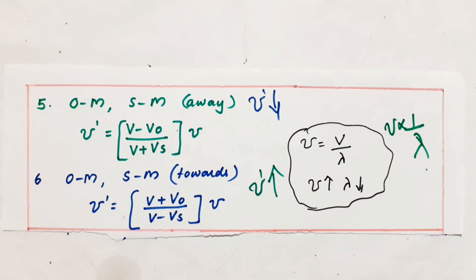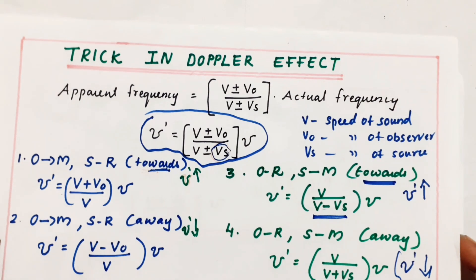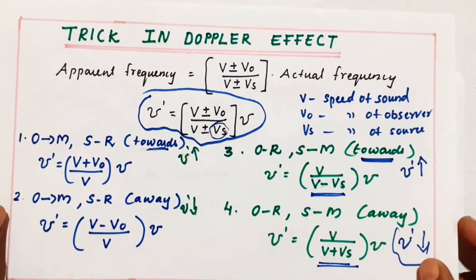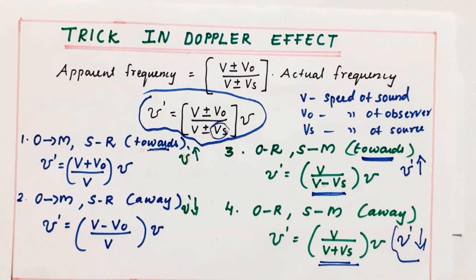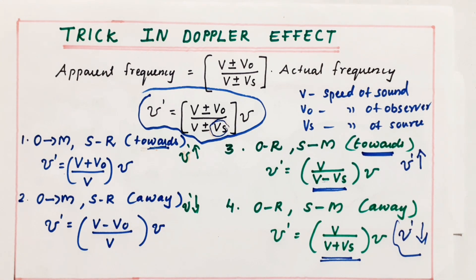In short, Doppler effect questions are very simple. The apparent frequency equals V plus or minus V_O by V plus or minus V_S, into actual frequency. You can solve any Doppler effect question using this concept. Hope you understood the video. If you like the video, like and subscribe to our channel VGUY TV. Thank you.